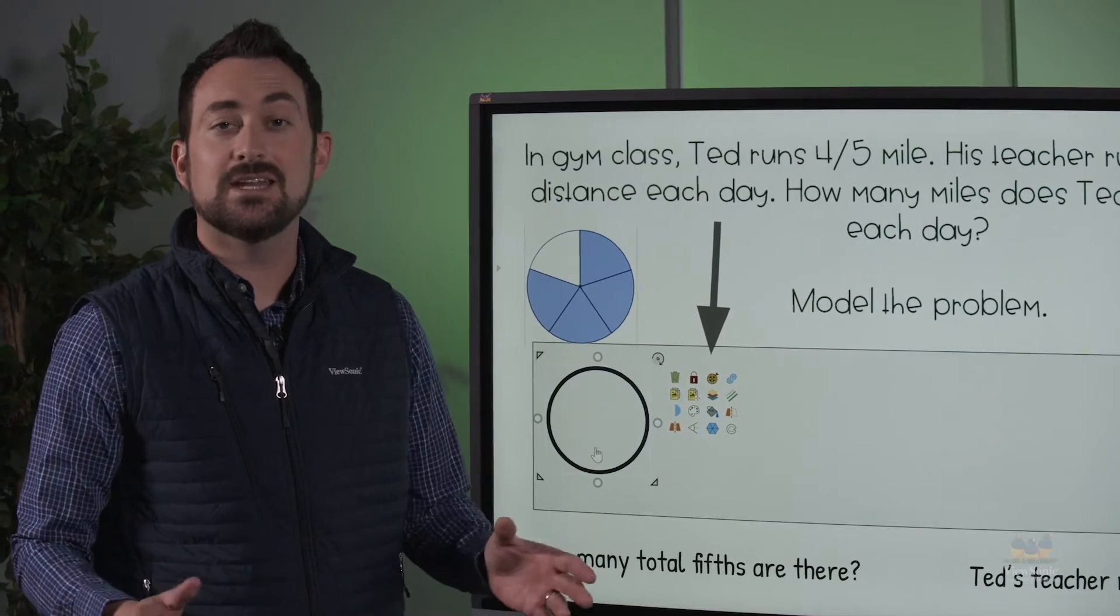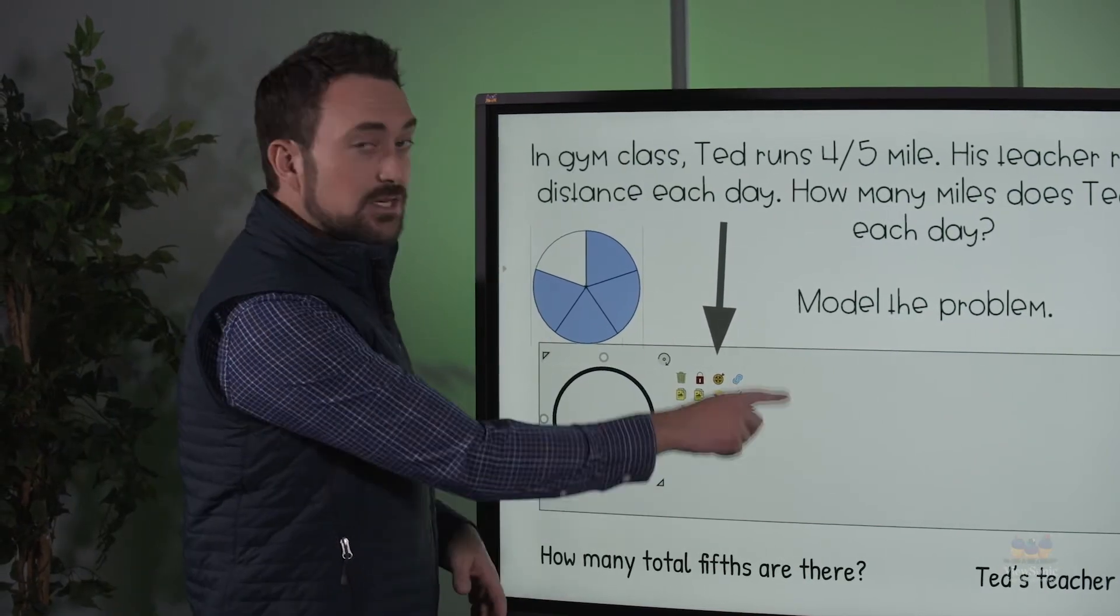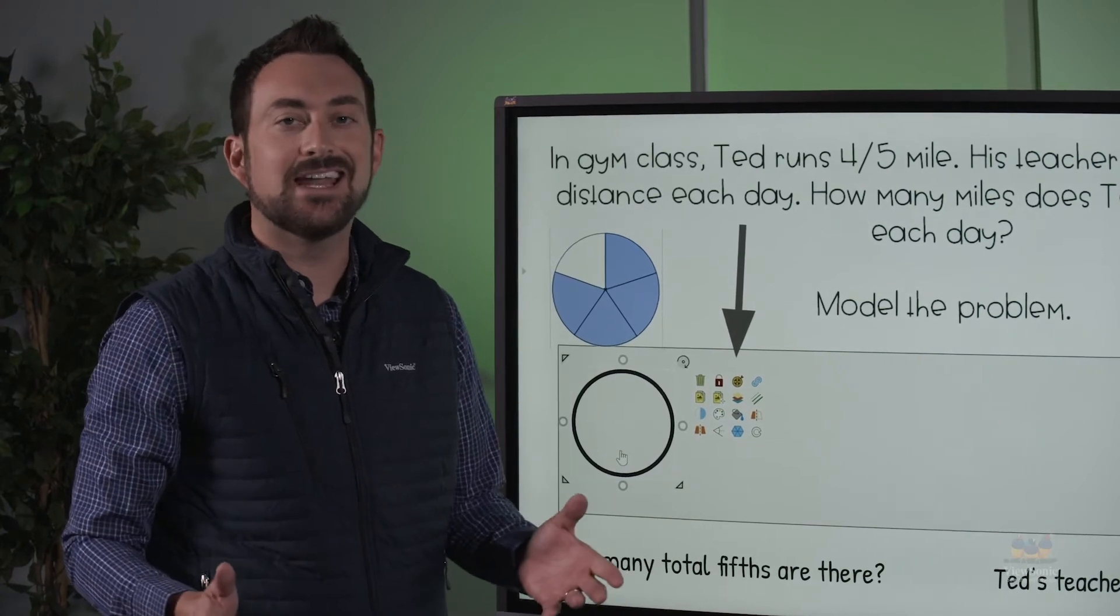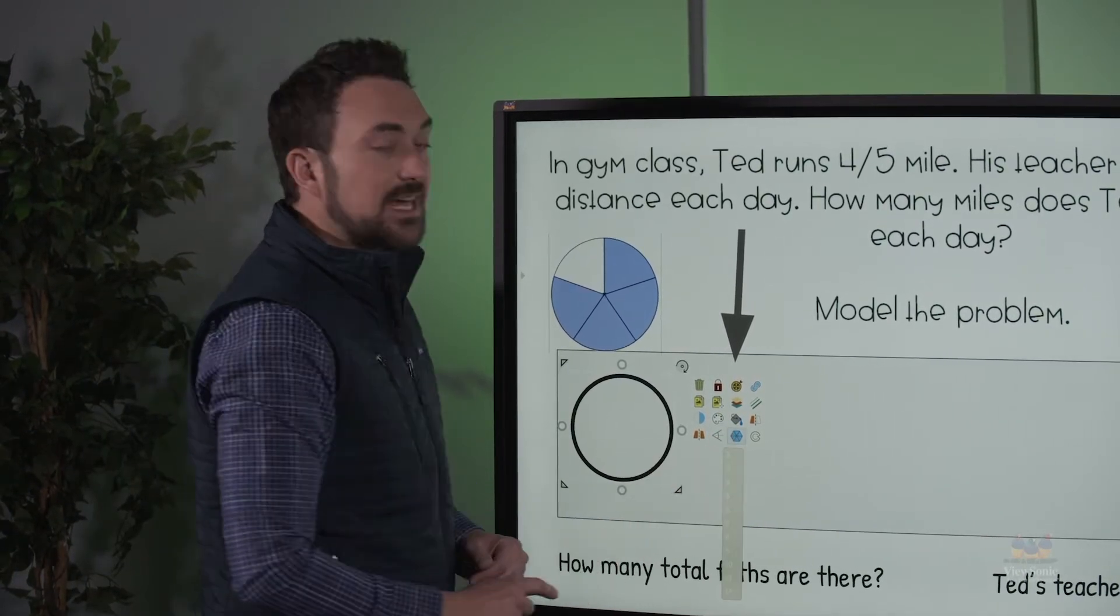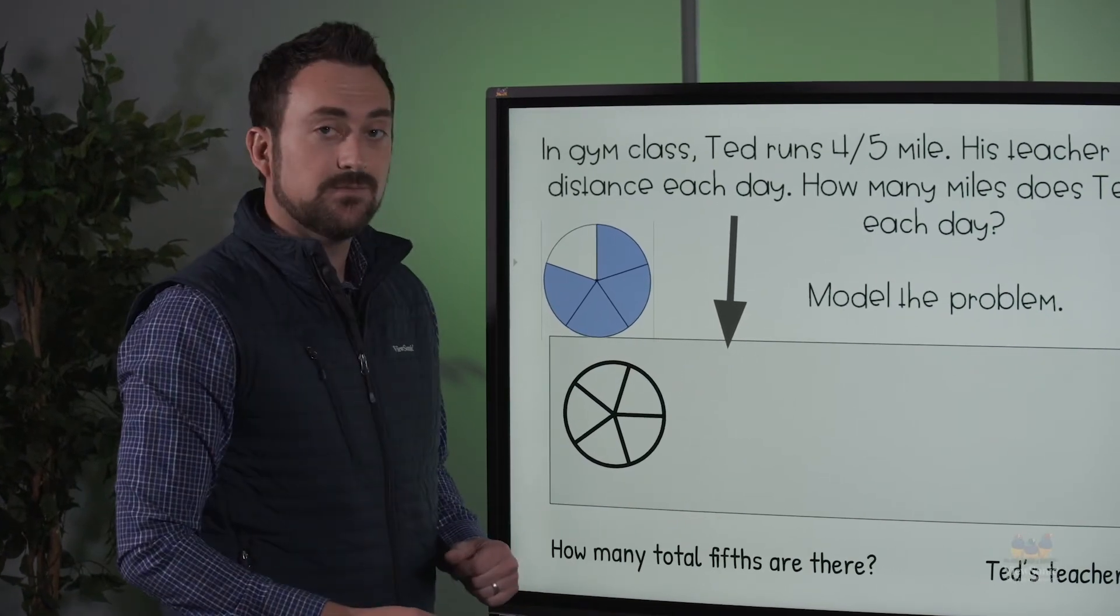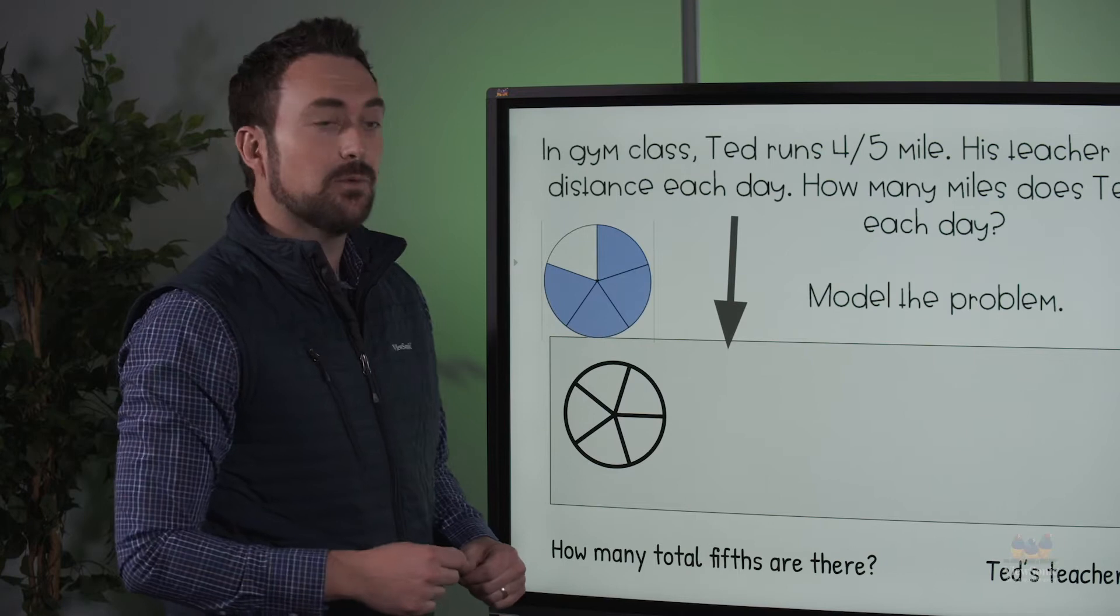When you draw any kind of shape object or you add an image or text, you'll always get this little menu that pops up. This is called the adorning menu and it allows you to edit objects. We're going to choose the segment feature and we're going to segment this circle into fifths, which is going to replicate the problem we're doing here.